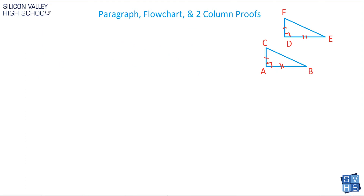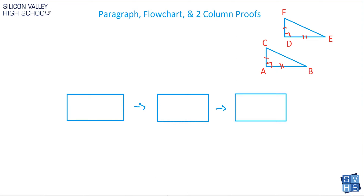The second type is a little more common, so we'll break that down. This is what flowchart proofs look like. The flowchart proof is a way to visually represent your logic. I actually like these — I think they make sense. You have a box, and inside the box you make your statement, and underneath you write the reason. You continue this until finally you come to the conclusion that, yes, these triangles are congruent.